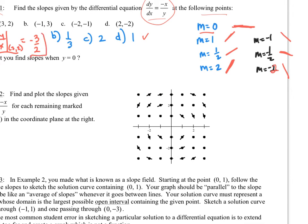At the point (3, 2) I get a slope of negative 3/2. Going to 1, 2, 3 and 1, 2 — that's a slope of about negative 1.5. For part B at (-1, 3), this is a slope of 1/3, which looks about right going up to the right. For part C at (-2, -1), I have a slope of 2 — I made a mistake, that should be negative 2. For part D at (2, -2), I plot a slope of 1.